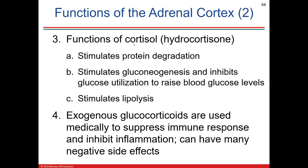Here are the functions of cortisol. Breaking down proteins causes gluconeogenesis — the production of glucose from amino acids — which only makes sense if you're starving and getting no glucose or fats. Cortisol raises glucose levels to get glucose to your brain. It also stimulates lipolysis, the breakdown of fat, to get glucose into the blood for energy.